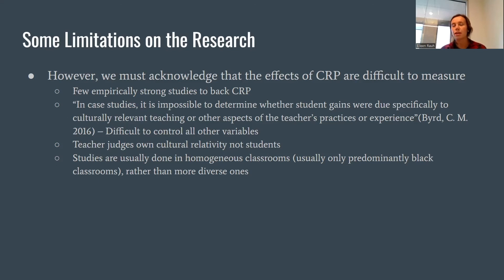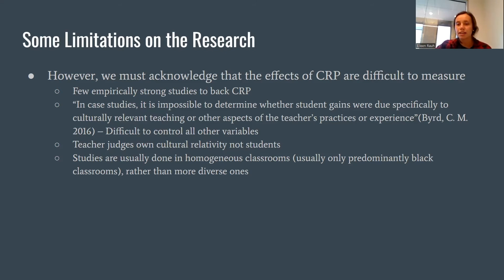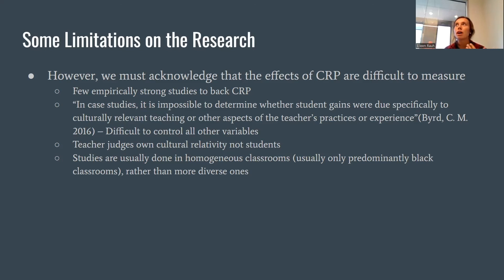Additionally, the teacher or academic professional is the person judging whether what they're teaching is culturally relevant — yet culturally relevant teaching is supposed to be student-centered and relating to the student. A teacher determining whether what they're doing is culturally relevant presents issues, since they're not their students and don't know what their students are bringing, creating biases in the data. Finally, most studies on culturally relevant teaching have been done in largely homogenous — predominantly African-American — classrooms and haven't been transferred to classrooms with other minorities such as Asian Americans or Latino Americans.